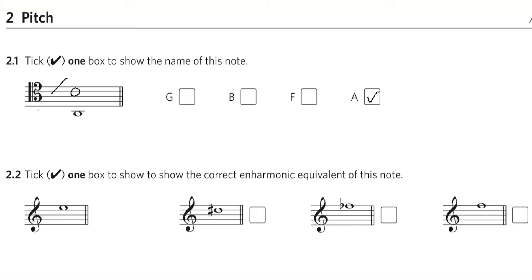So the given note is E, the first possible answer is D sharp. Well, D sharp is one semitone above D, so it is not E. F flat. Now remember that a flat sign doesn't necessarily mean a black note, it means one semitone below the written note. And one semitone below F is in fact E, so F flat and E are enharmonic equivalents, so we tick this box.